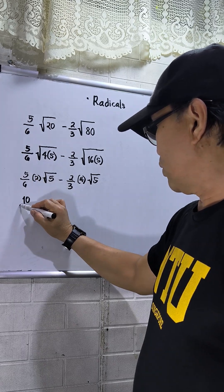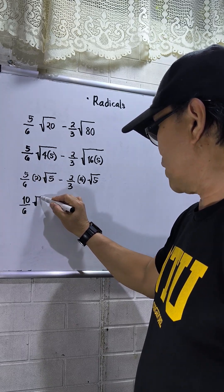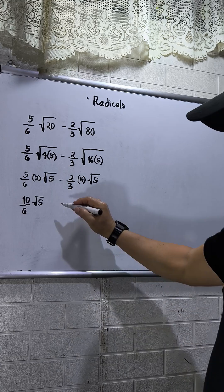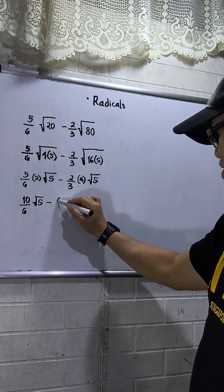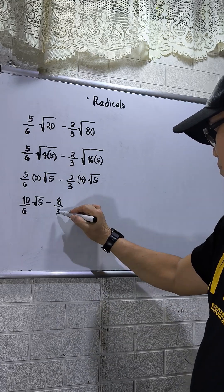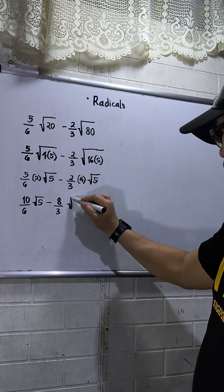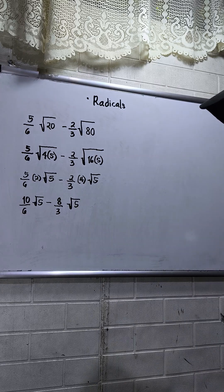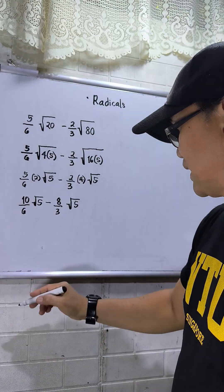5 times 2 is 10 over 6, square root of 5. Then minus 2 times 4, that is 8 over 3, square root of 5. Reduce to lowest term, divide by 2, so this will be 5 over 3 square root of 5.